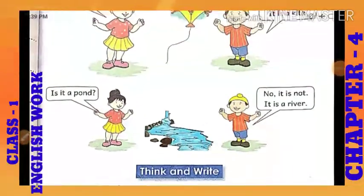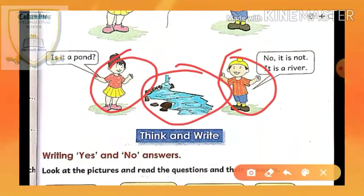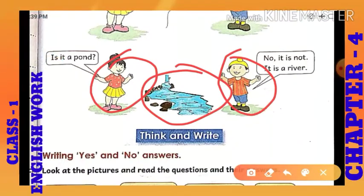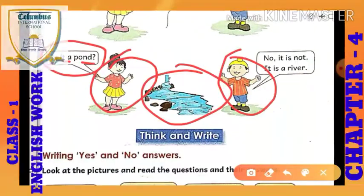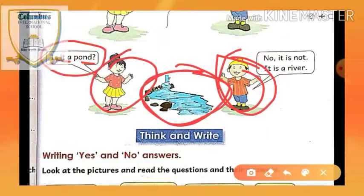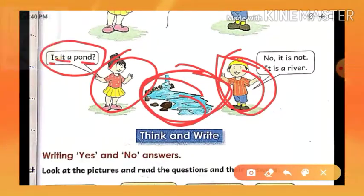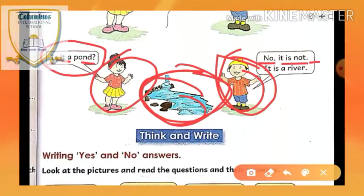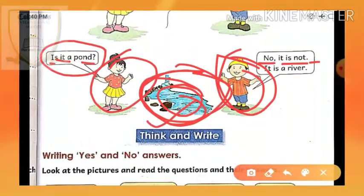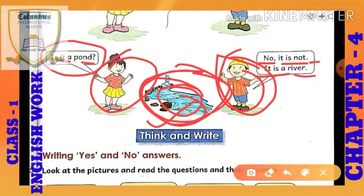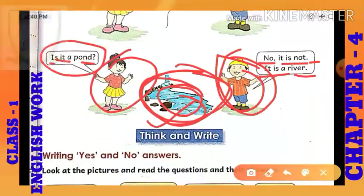Next, again you have the same girl and boy, with a different picture. The girl is asking: 'Is it a pond?' And then the boy replied that it is a river. It is a river. Clear — now you all have understood how to ask a question and how to give an answer.